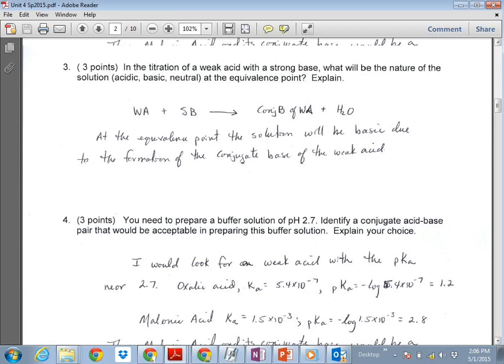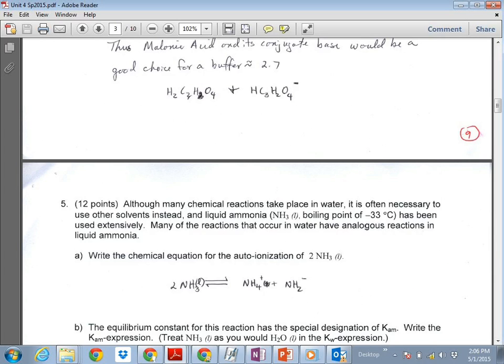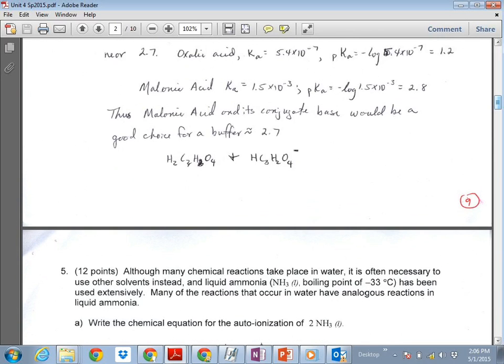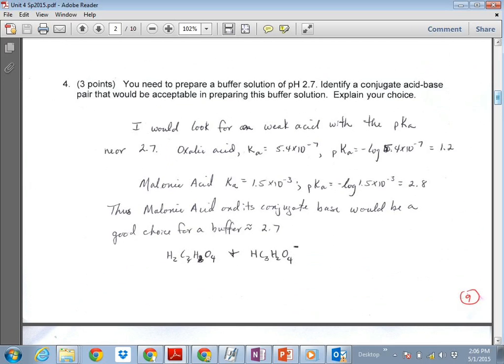Malonic acid, if you look at it, it's a better choice because its Ka value is 1.5 times 10 to the negative third. So the pKa is 2.8, which is pretty close to your target pH. Okay, so if anybody asks you to go make a buffered solution and you have a table of Ka values, find the pKa and make the pKa next to that target pH. So that was what I was after there.